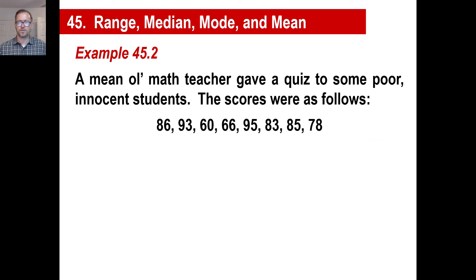Let's take another one. Mean old math teacher gave a quiz to some poor, innocent students. The scores were as follows. And there they are. Okay. So let's find everything again. Let's find the mean, median, mode, and range. So we have 60, 66, 78, another one. Let's see. We got 83 and 85, and how about 86, 93, and 95. I always check mine to make sure I have the same number. There we go. It's eight. So first let's find the range. Well, we have 95 minus 60. So the range will be 35.